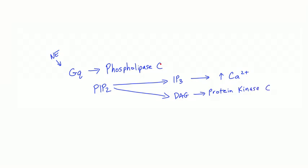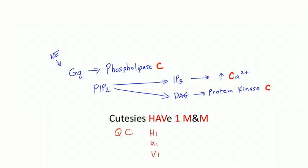IP3 increases intracellular calcium, which mediates various downstream effects. DAG activates protein kinase C. Associate the C's together: Gq activates phospholipase C, protein kinase C, and calcium. The mnemonic is 'Cutesies have one M&M' — Q and C for Gq and phospholipase C, and 'have one M&M' tells you which receptors use Gq: H1 (histamine 1), alpha 1, V1 (vasopressin 1), M1, and M3 muscarinic receptors.